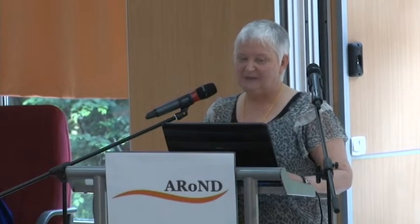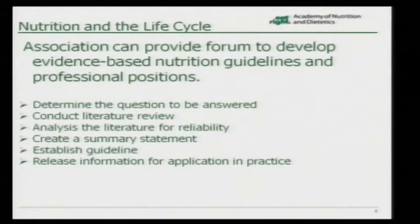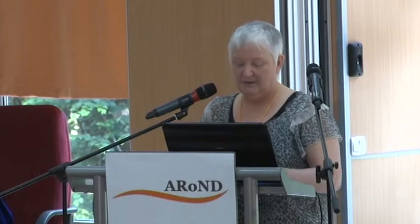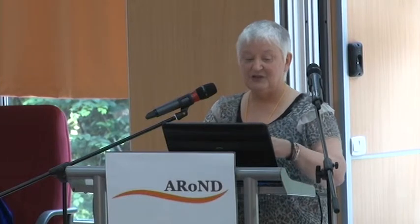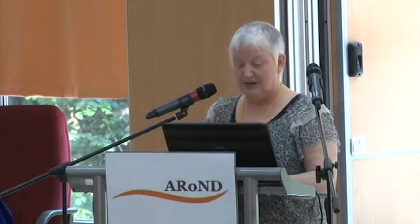What the association can do — and associations working in these areas — they provide a forum for how we begin to develop some of the guidelines we need. We use our professional evidence: we look at what is the question we need answered, how do we get to the literature and review it, analyze it, create a summary, establish a guideline, and then release the information for application and practice. This is one of the things we do as an association for our members, many of them around the life cycle. Then all professionals can come together and use that guideline when looking at the literature.